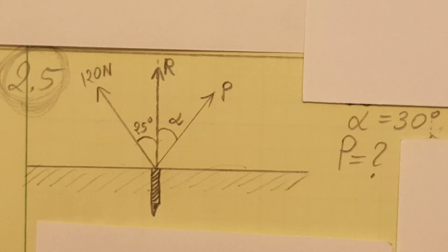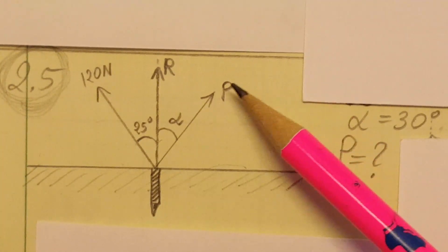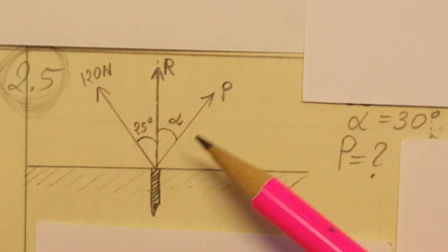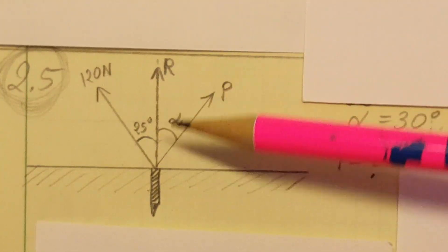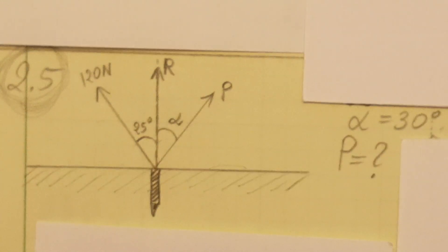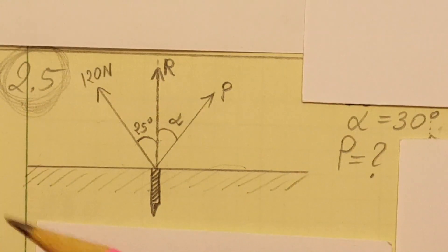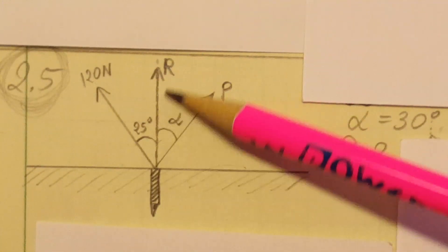Now they are asking us to determine by trigonometry the magnitude of this force P in such a way where the resultant will be vertical on the stake. In part B they are asking us to find the corresponding magnitude of this resultant.